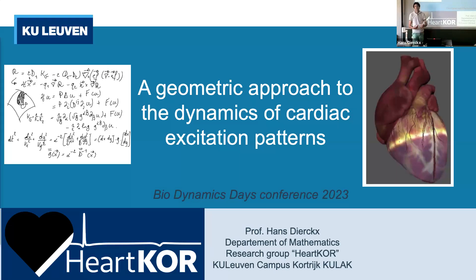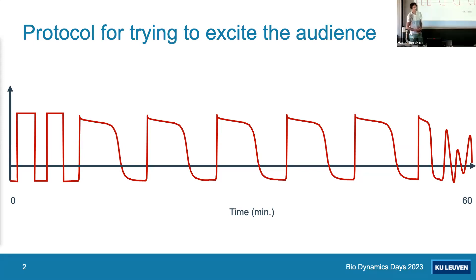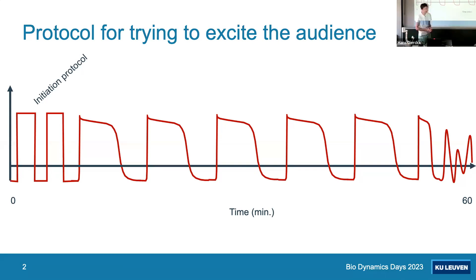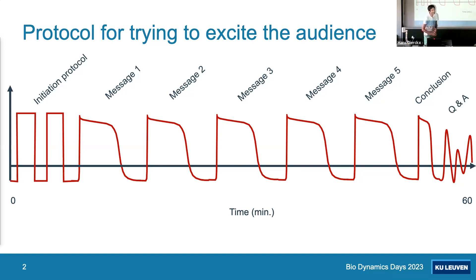The speaker humorously notes that what looks like a stimulation protocol and train of action potentials is actually an outline of his talk. His protocol for exciting the audience begins with initiation protocols — sending waves of knowledge about how the heart works — followed by five distinct parts or messages, a brief conclusion after the fifth message, and then a Q&A session which he hopes will not go into a chaotic state.